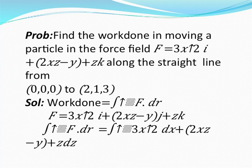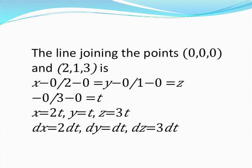Problem: if f-bar equals 2xz i minus y j plus 2z k, evaluate the work done along the straight line from (0,0,0) to (2,1,3). Work done equals the integral of f-bar dot dr. Here f-bar equals 3x² i plus (2xz minus y) j plus z k. The line joining (0,0,0) to (2,1,3) in parametric form gives x equals 2t, y equals t, z equals 3t, so dx equals 2 dt, dy equals dt, dz equals 3t dt.